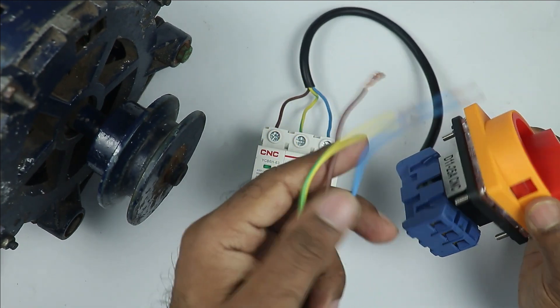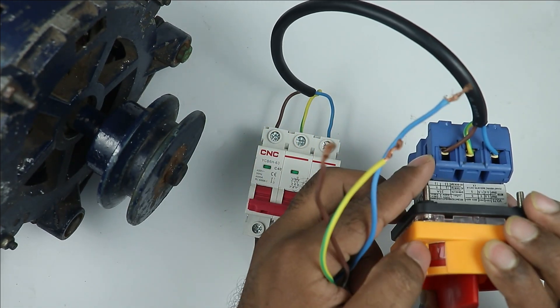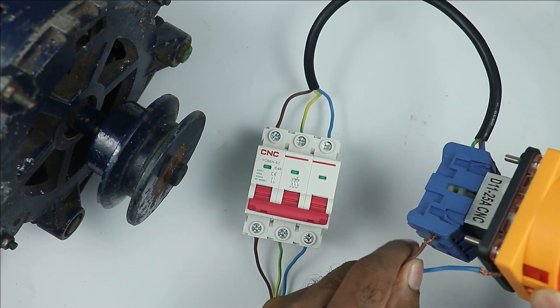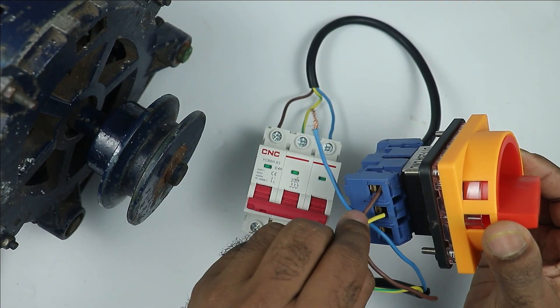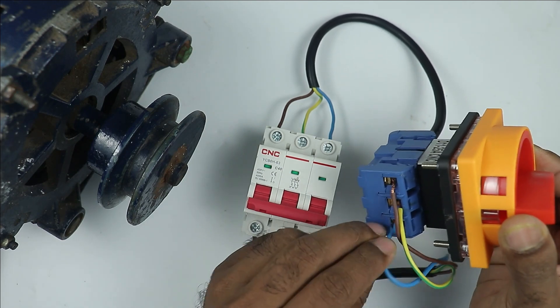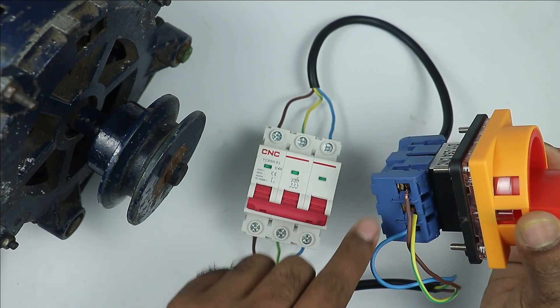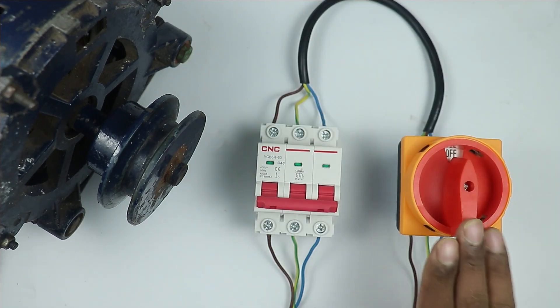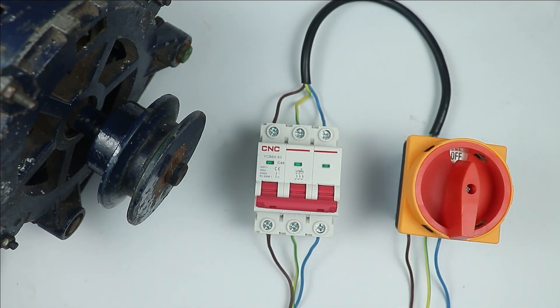When you are connecting, keep phase sequence in mind. On the terminal where R phase is connected, at the output also connect R phase. Similarly at middle, connect Y phase and at last terminal connect B phase wire. So R, Y, B connected in sequence here. So for rotary switch, only this much connection is required.